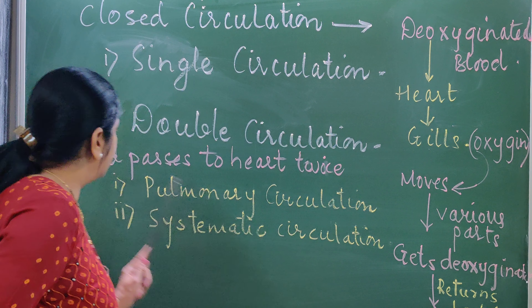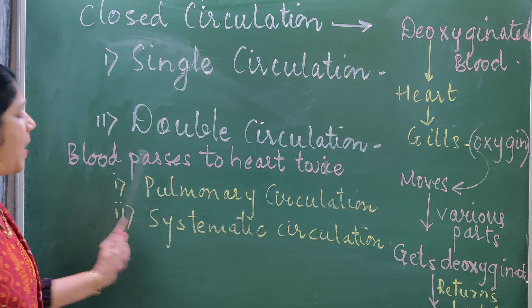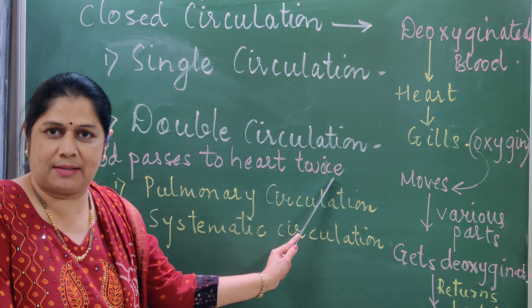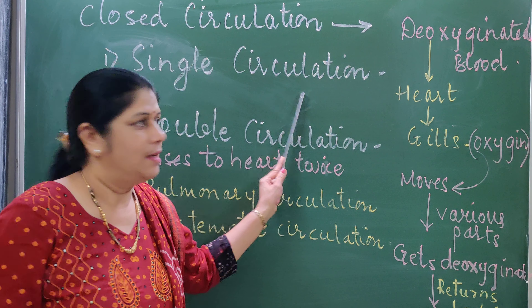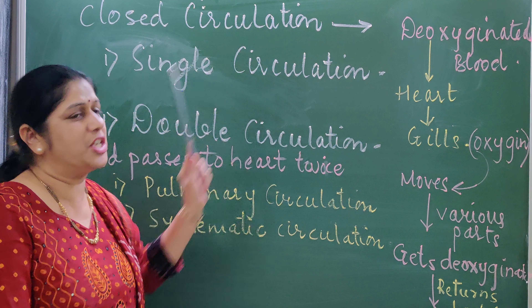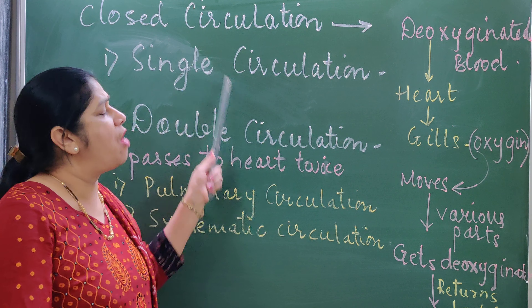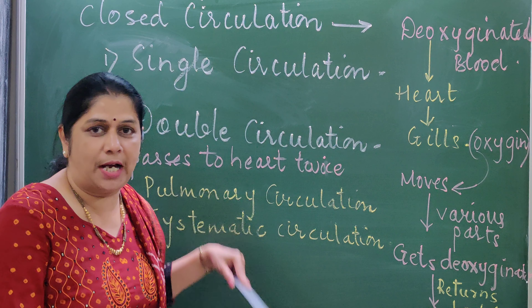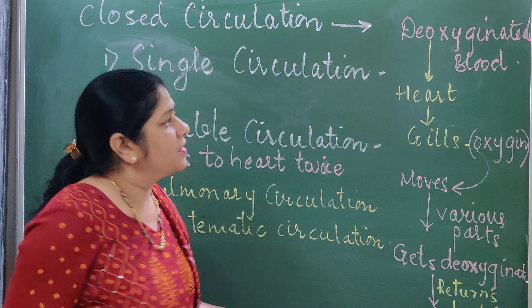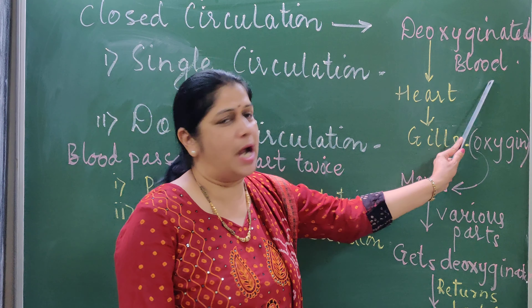The third component of the circulatory system is the heart. But before studying the structure of the heart, let me explain. This closed circulation is further studied into two types: single circulation and double circulation.